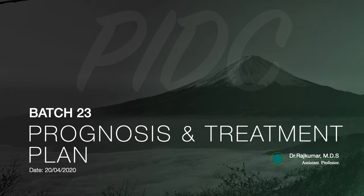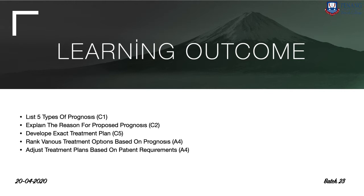Dear Batch 23 students, today's class is on prognosis and treatment planning. We have seen diagnosis in Year 3; welcome to Year 4. The learning outcomes of prognosis and treatment planning are: list five types of prognosis, explain the reason for proposed prognosis, develop an exact treatment plan, rank various treatment options based on the prognosis, and adjust the treatment plan based on the patient's requirement.